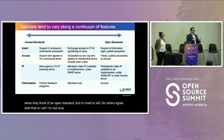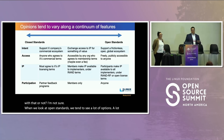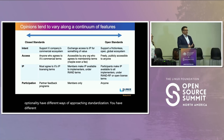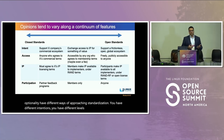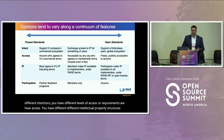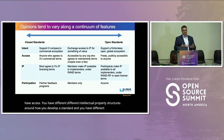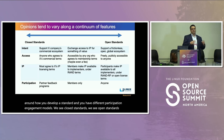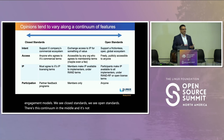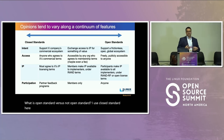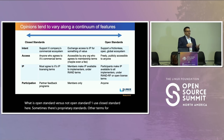When we look at open standards, we tend to see a lot of optionality, different ways of approaching standardization. You have different intentions, different levels of access or requirements around access, different intellectual property structures around how you develop a standard, and different participation engagement models. We see closed standards, we see open standards — there's a continuum in the middle. It's not very clear exactly what is an open standard versus not.